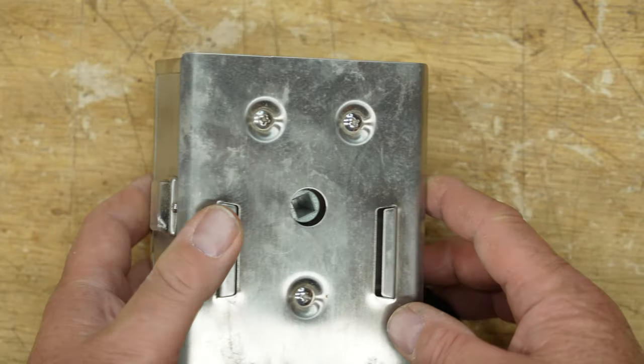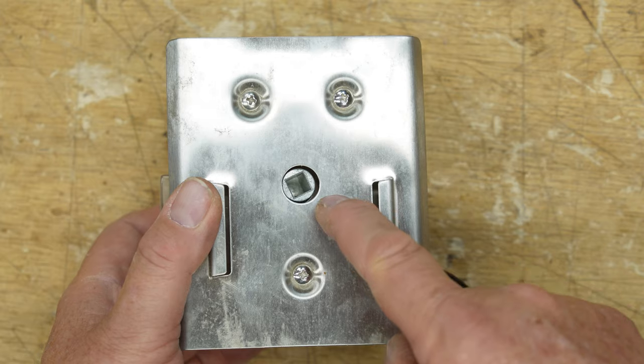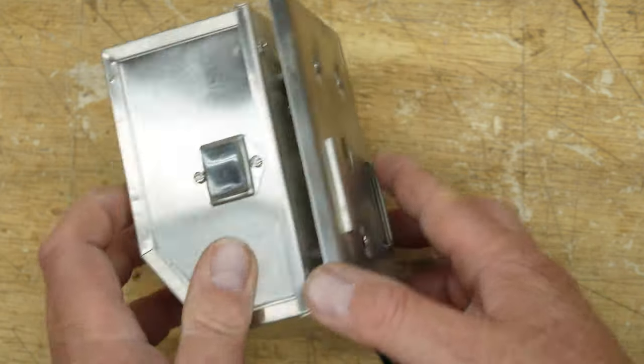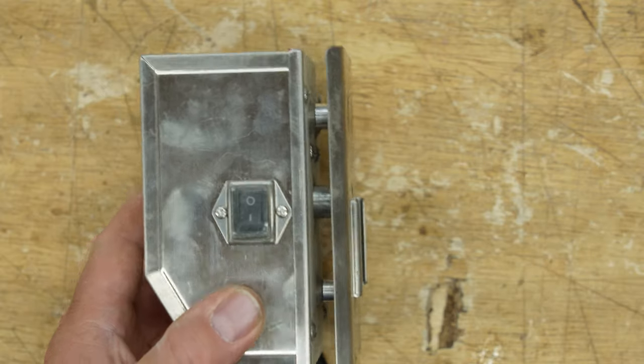This rotisserie will turn whatever is put into that square pegged hole at 8 rpm. Obviously a barbecue rotisserie, it would have been the rotisserie rod just coming from there.